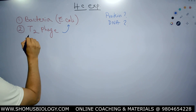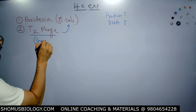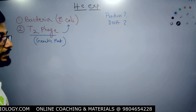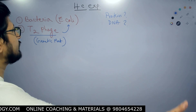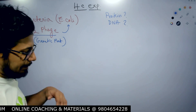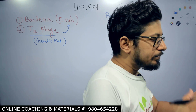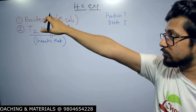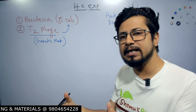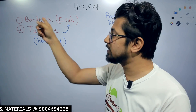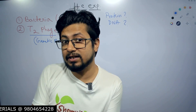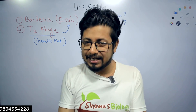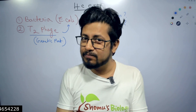What is the genetic material in T2 phage is what they needed to figure out, and that's what they did with the help of their experiment. T2 phage attacks E. coli and injects the genetic material from itself into the bacterial cell. Then, if we measure the bacterial cell after the phage infects the bacteria, we can find out whether the genetic material there is DNA or protein.